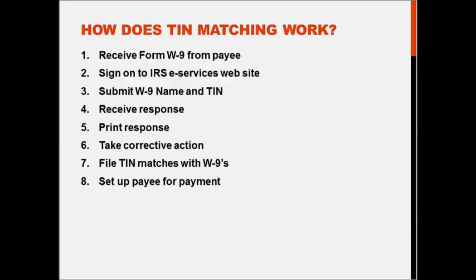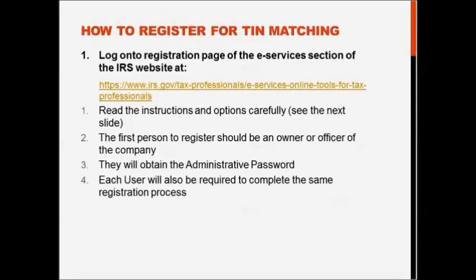How does it work? You receive your W-9 from the payee, sign on to the e-services page of the IRS website, submit the W-9 name and TIN, and receive a response. Print it if it doesn't match and you get a bad code — then you need to take corrective action. I'll show you the codes in just a few minutes. If it does match, file the TIN match response with the W-9 and you're ready to set up your payee for payment. Registering became more difficult once the two-step verification process came into play in October 2017.